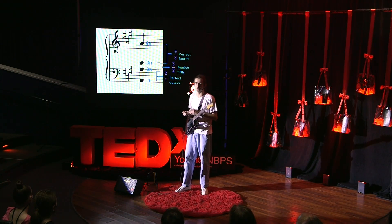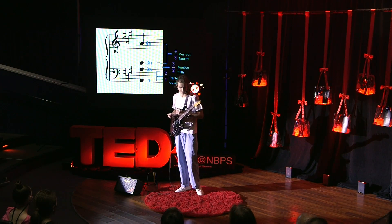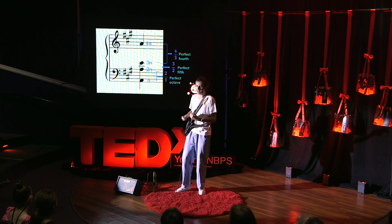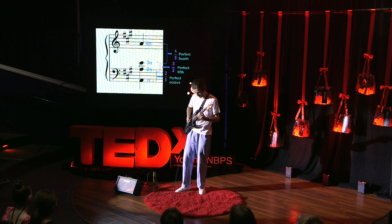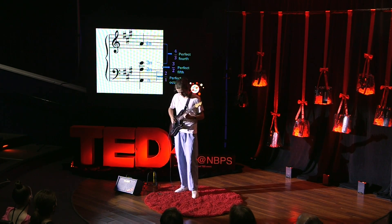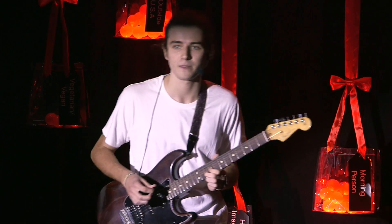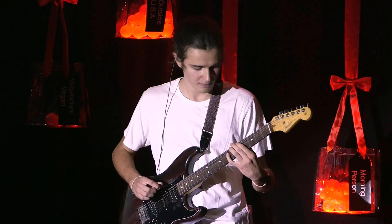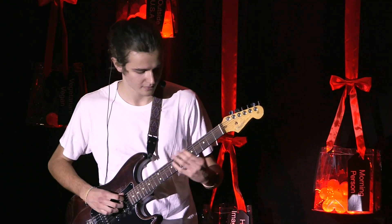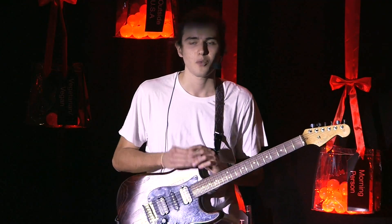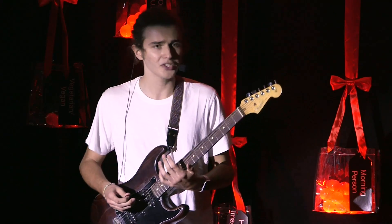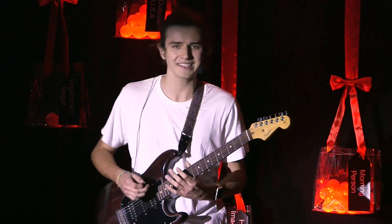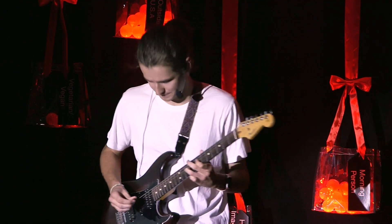Musically, if we take two notes, we call that an interval. So when we play these Pythagorean intervals: 2 over 1 — we call this the perfect octave; 3 over 2 — the perfect fifth; 4 over 3 — the perfect fourth. When we play them, when we listen to them, they sound good. Let's take the perfect fifth for instance — the ratio is 3 over 2.